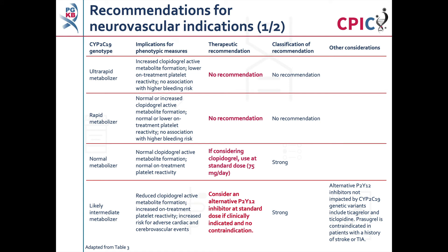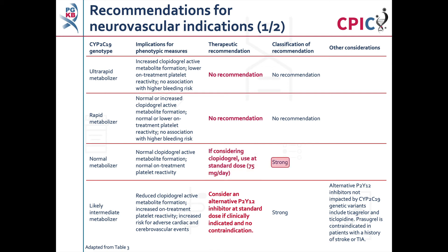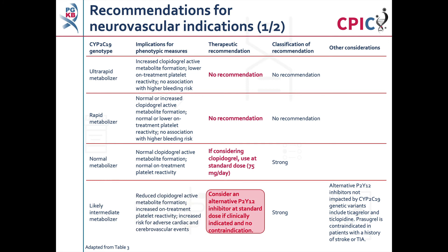These are the CPIC dosing recommendations for clopidogrel in neurovascular indications. No recommendation is given for CYP2C19 ultra-rapid or rapid metabolizers taking clopidogrel for neurovascular indications. Patients who are CYP2C19 normal metabolizers can receive the standard dose of clopidogrel — a strong recommendation. Patients who are CYP2C19 likely intermediate metabolizers have reduced active metabolite formation and increased on-treatment platelet reactivity, putting them at increased risk for adverse cardiac and cerebral vascular events; an alternative platelet inhibitor should be considered. This is a strong recommendation.